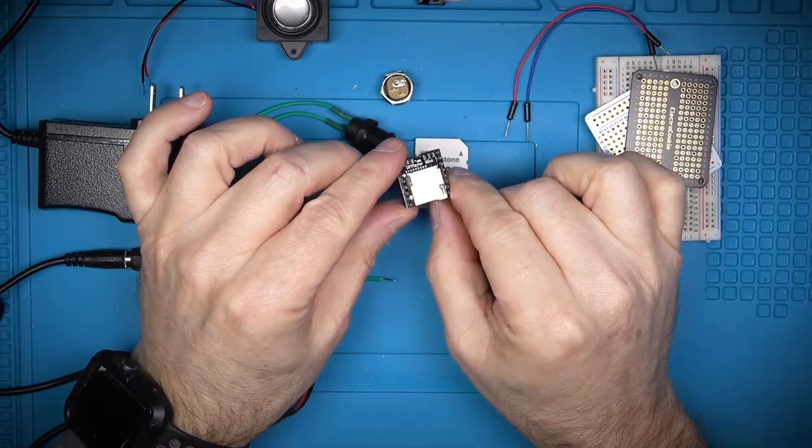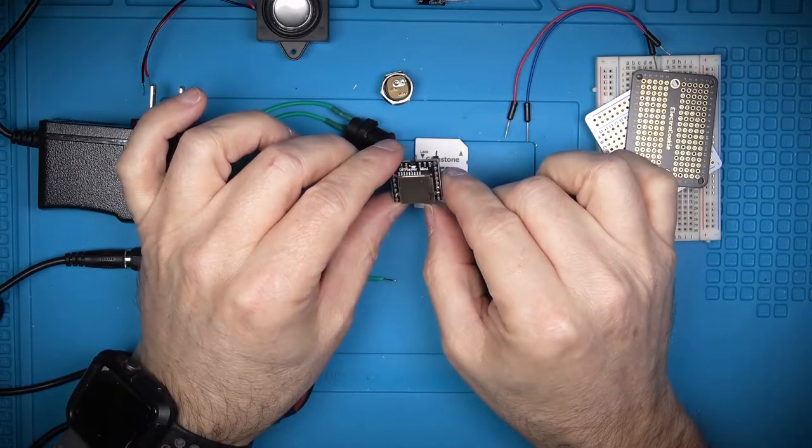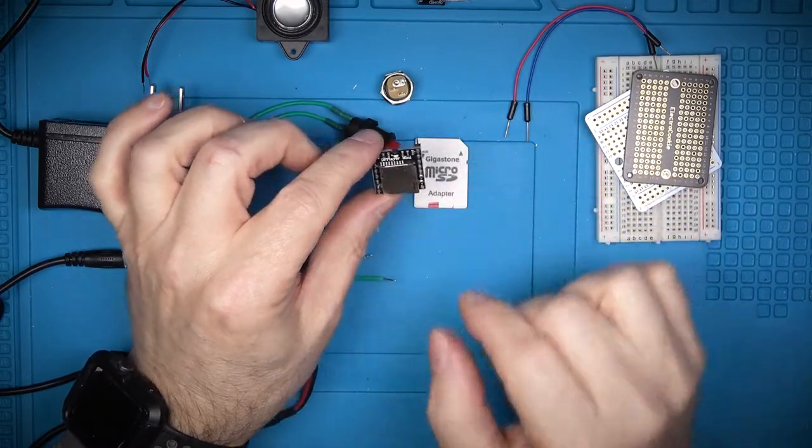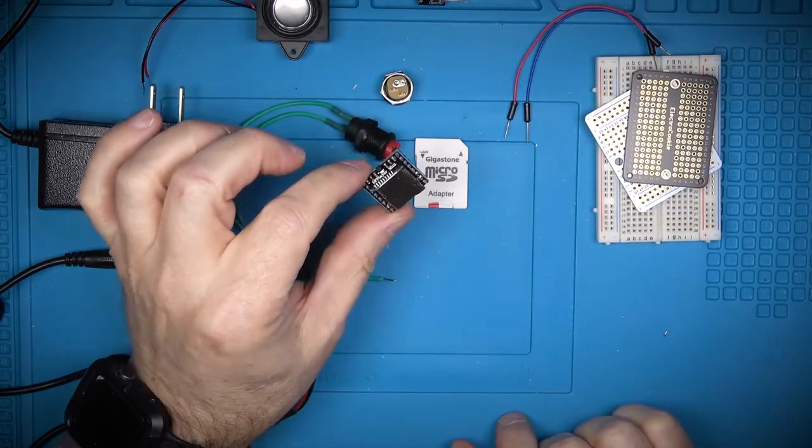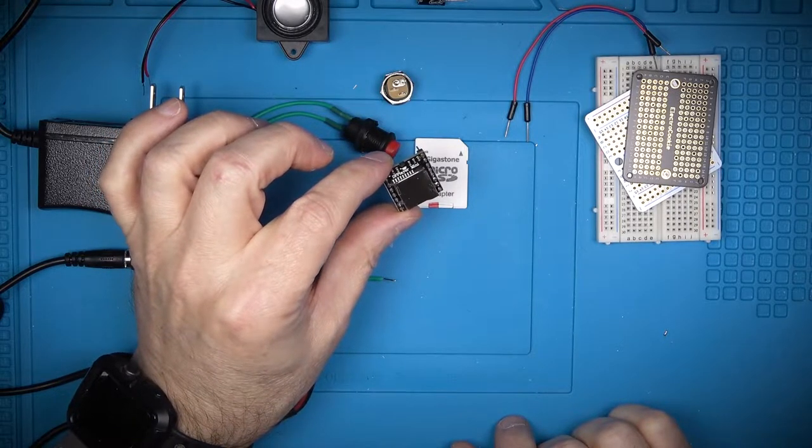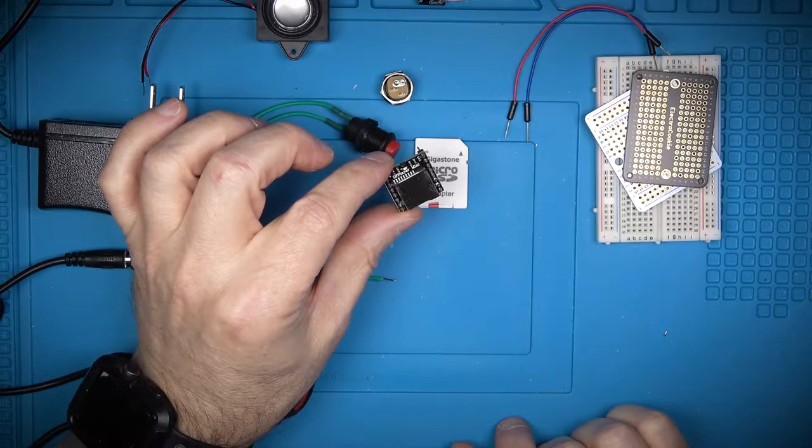For this project, we're going to be using the DF Player Mini MP3 module. This is a really affordable but very capable MP3 player. It does a lot but we're going to really just use a simple configuration to get things going.